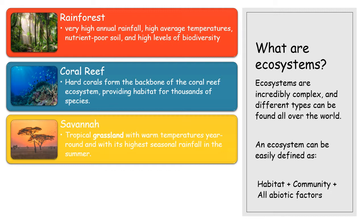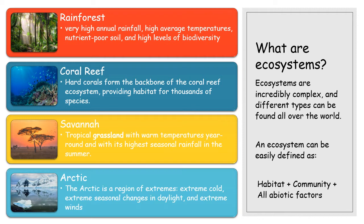Savannah — you'll have seen examples: lions, zebras, giraffes. Tropical grasslands with warm temperatures year round but peak rainfall in summer. And the Arctic — you might not think of it as having huge biodiversity, but it does. There are incredible extremes of cold and seasonal changes in daylight, yet there is a huge abundance of biodiversity. All of these ecosystems are being hit by human impacts in a variety of different ways.